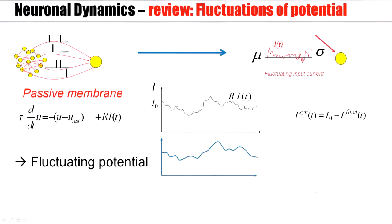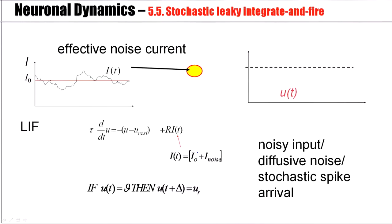So we have seen for a passive membrane, described by this kind of differential equation, driven by a fluctuating current, that we can calculate the fluctuating membrane potential. The main difference to the case of a Leaky Integrate-and-Fire model is that this linear differential equation is combined with a threshold and reset process.